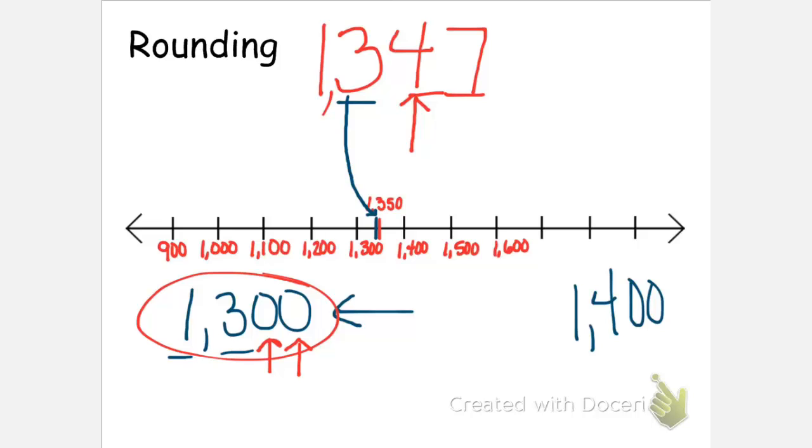You can see because we have zeros in the tens place and the ones place, we've lost that detail. The four and the seven details are now gone. And we have a simpler number, but we have lost some of the information that we had in the original number.